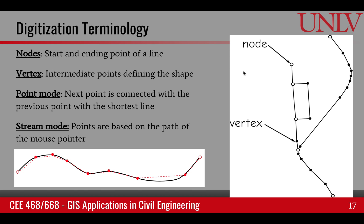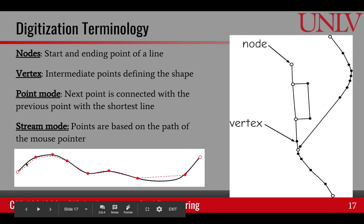When digitizing, we can use point mode digitization. If this black line is a boundary or road on the map, you click point by point, and each new click connects to the previous point with a straight line. To capture curvature, you need many points. We set a point density and stick with it — fewer points on straight paths, more points when reaching curves.